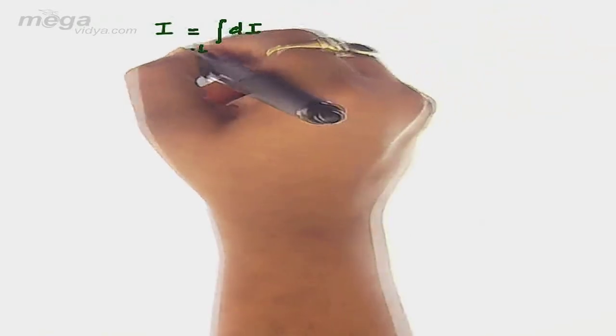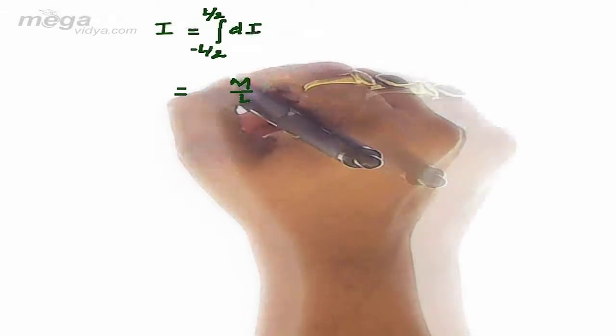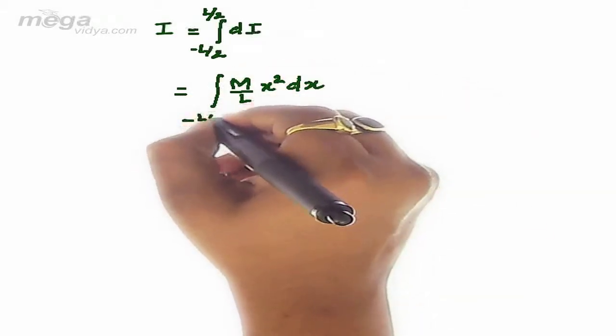It will come out to be equal to integral from minus L by 2 to L by 2 of M upon L x squared dx.